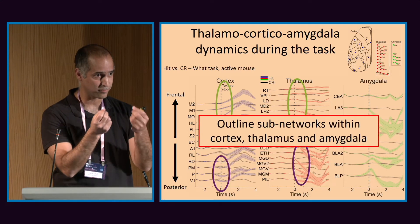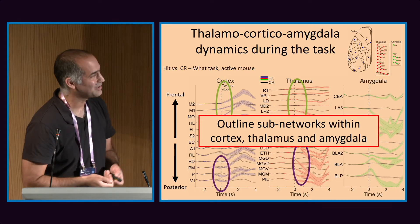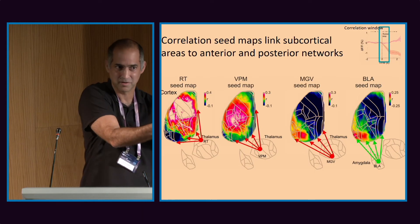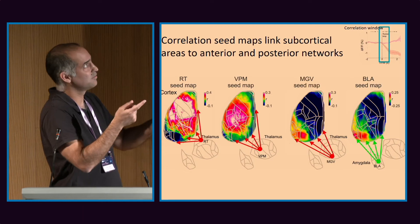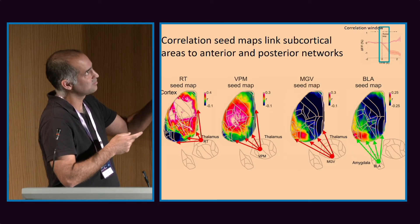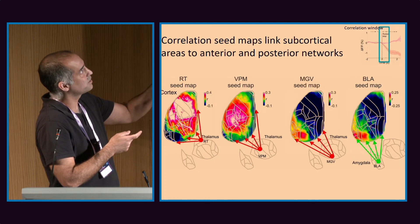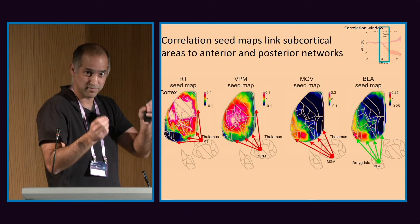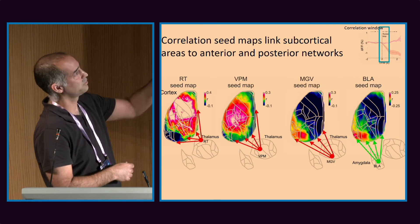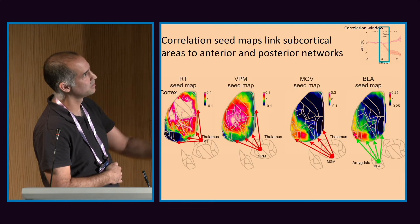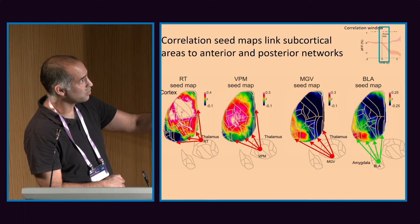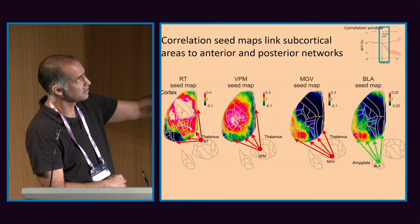Let's try to outline the sub-networks. I looked at a seed-pixel analysis like in human neuroimaging. You take a seed — here the seed is just a fiber — and correlate that fiber with all pixels in the cortex in a very restricted time window. RT is very much correlated to the frontal part and negatively correlated to the posterior. VPM, for example, is correlated to barrel cortex more than the others, and the posterior thalamic area is correlated to the posterior part of cortex and negatively correlated to the frontal part.